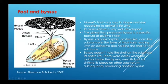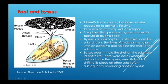The mussel's foot may vary in shape and size according to the animal's lifestyle, and its musculature is very well developed. The gland that produces byssus is a specific feature of bivalve feet. Byssus is a polymorphic, protein-like, cord-like substance in the form of thick hairs ending with an adhesive disc holding the shell to the substrate. Byssus doesn't hold the shell to the substrate for its entire life — there were cases when the animal broke the byssus, used its foot for shifting position on other substrata, and subsequently produced new byssus.